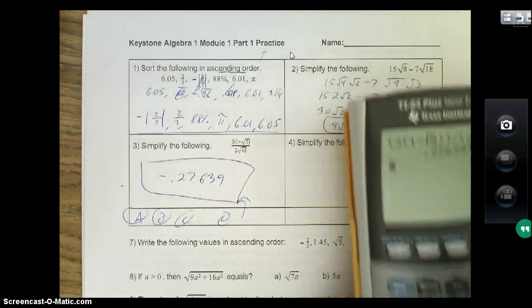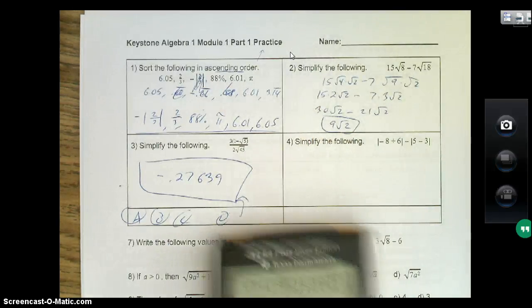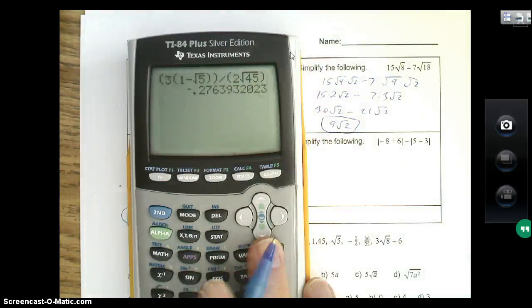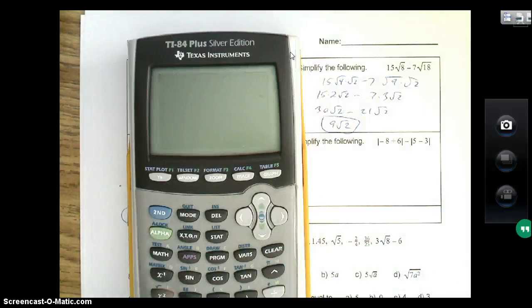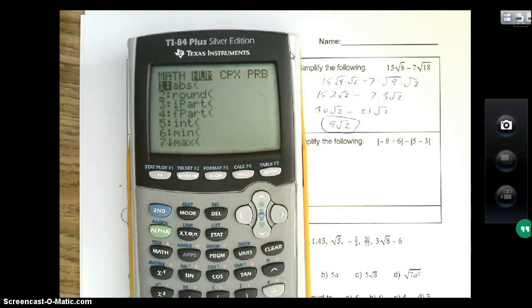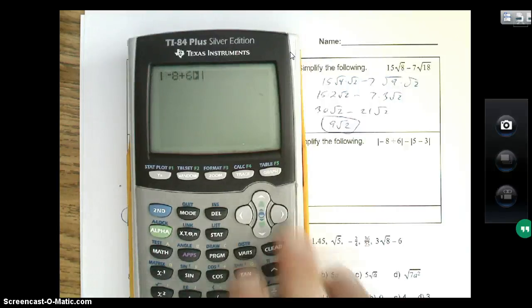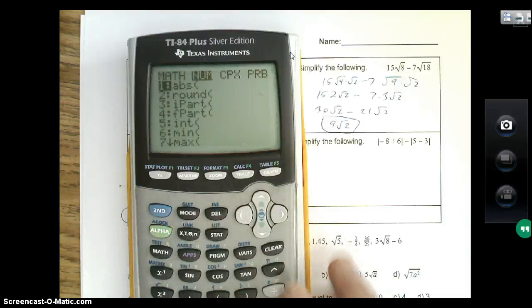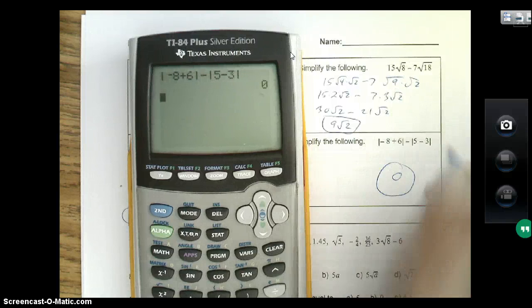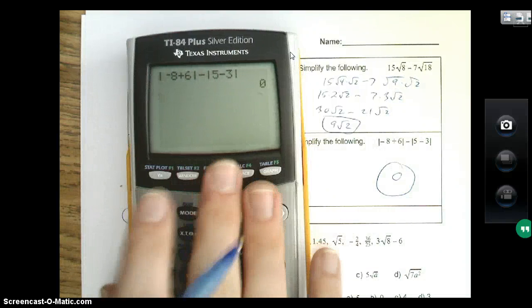All right, number four: simplify the following. You can do all this on the calculator as well. The absolute value button is you hit math, go to the right one, there's your abs. So I'm just typing it in: negative eight plus six, get out of there, minus math again, abs, five minus three, which gives you your answer zero. So don't hesitate to use this, please please please use it.